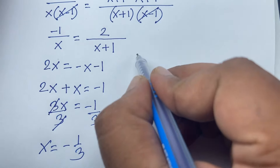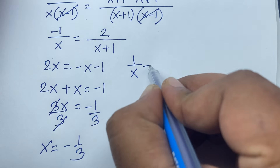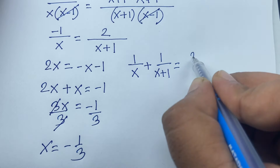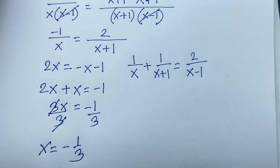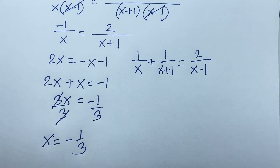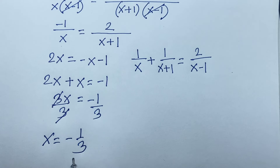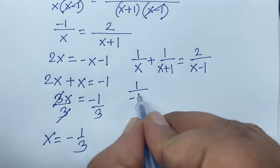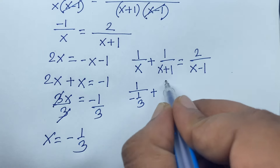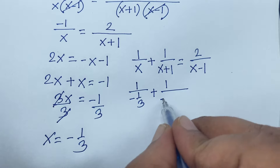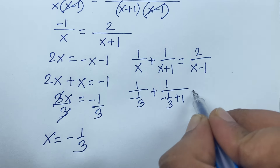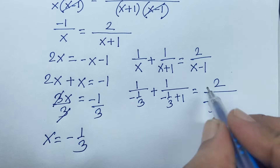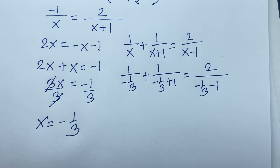Now let's verify: the original equation is 1 over x plus 1 over x plus 1 equals 2 over x minus 1. We found x equals minus 1 over 3. Substituting into the left side: 1 over minus 1 over 3, plus 1 over minus 1 over 3 plus 1, equals 2 over minus 1 over 3 minus 1.